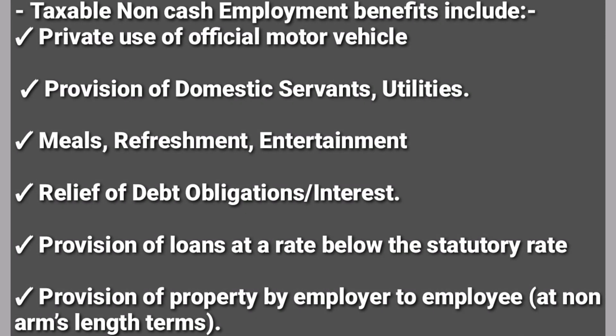We shall look at the taxable non-cash employment benefits provided by the employer to the employee. Private use of an official motor vehicle — if an employee uses the office motor vehicle for personal use, it is a taxable benefit in kind. Then provision of domestic servants and utilities for domestic purposes are also benefits in kind that are taxed.